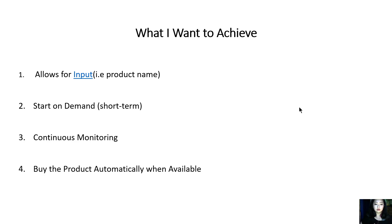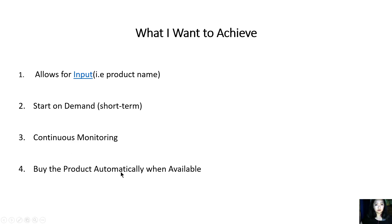With the name of 'shoe one,' I should be able to put that in. The bot would start whenever I call for it, and it will continue to monitor the website until the product 'shoe one' becomes available or shows up on the website. Then the bot will automatically purchase that shoe for me.